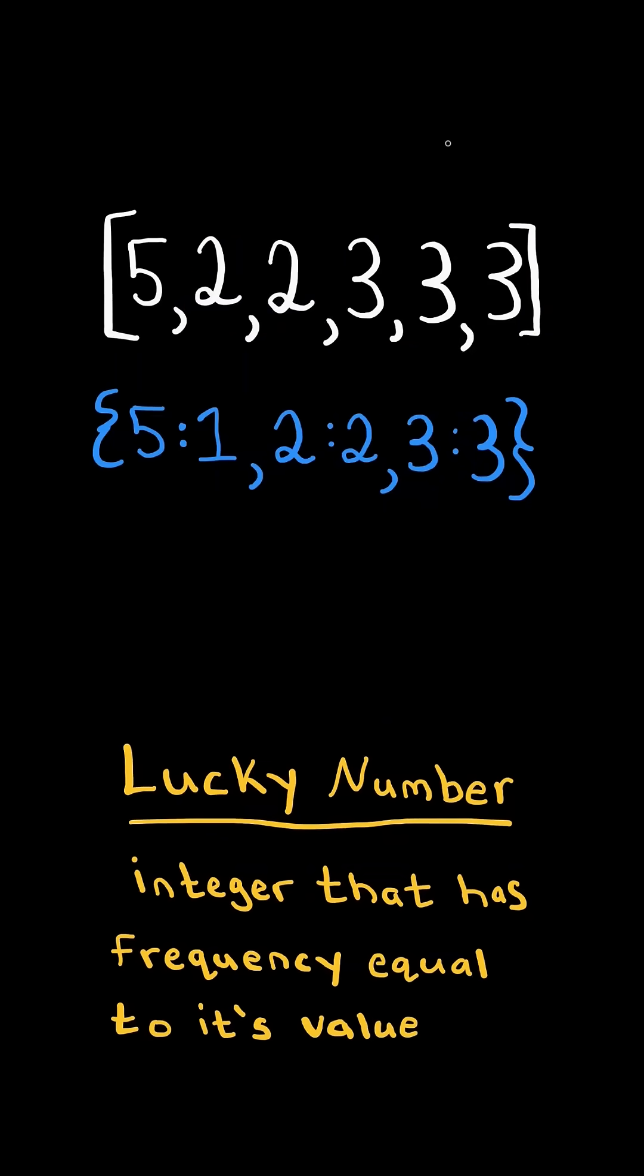First, we will create a frequency dictionary, mapping the integer to how many times it appears in the list. We then initialize a max lucky variable to negative 1.